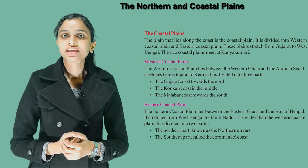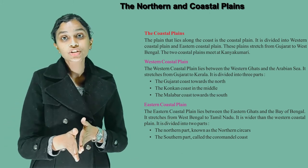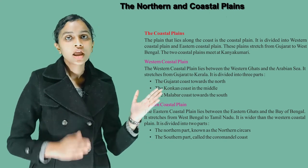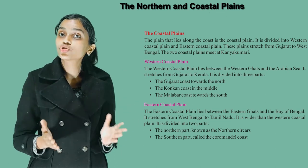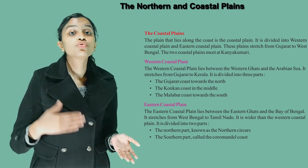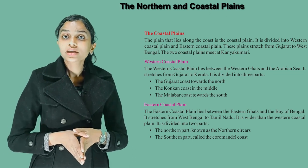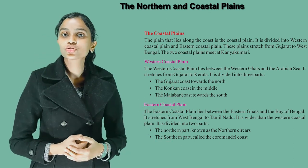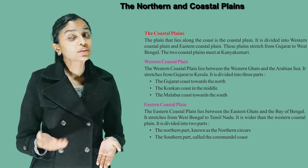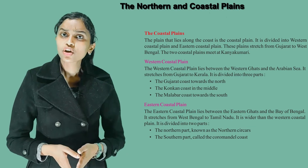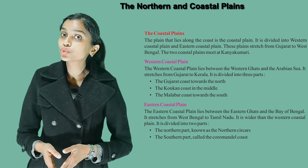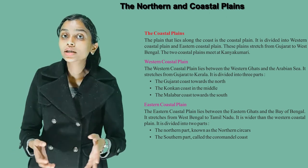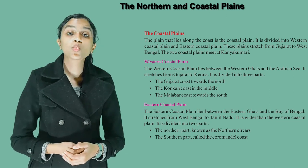The Coastal Plains. A plain that lies along the coast is called the coastal plain. It is divided into the western coastal plain and the eastern coastal plain. These plains stretch from Gujarat to West Bengal, and the two coastal plains meet at Kanyakumari. The western coastal plain lies between the Western Ghats and the Arabian Sea, stretching from Gujarat to Kerala. It is divided into three parts: the Gujarat coast towards the north, the Konkan coast in the middle, and the Malabar coast towards the south.